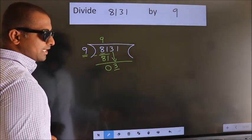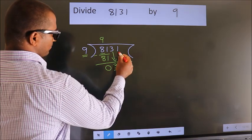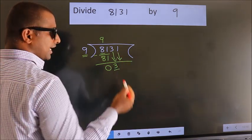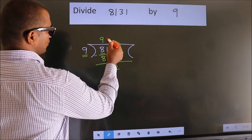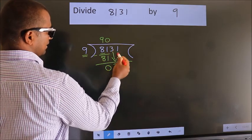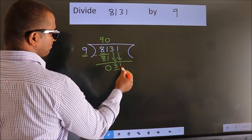So, we should bring down the second number. And the rule to bring down the second number is, put 0 here. Then only we can bring down this number.